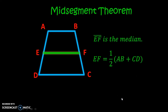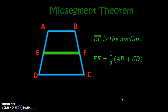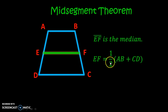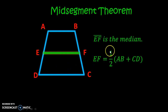We also need to review the mid-segment theorem. We are looking at the median of a trapezoid. Line segment EF is equal to one-half of the sum of the two bases AB and CB. So the formula is: EF equals one-half times the quantity AB plus CB.